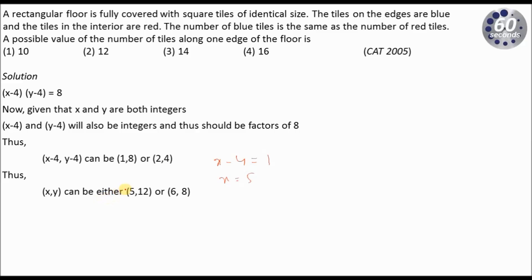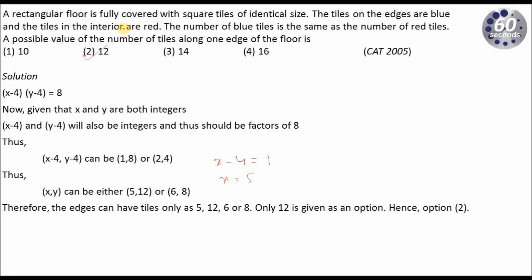So X and Y can be either 5 and 12, or 6 and 8. The possible edge counts are 5, 12, 6, or 8. The only option given among the answer choices is 12. So my answer has to be option number 2.